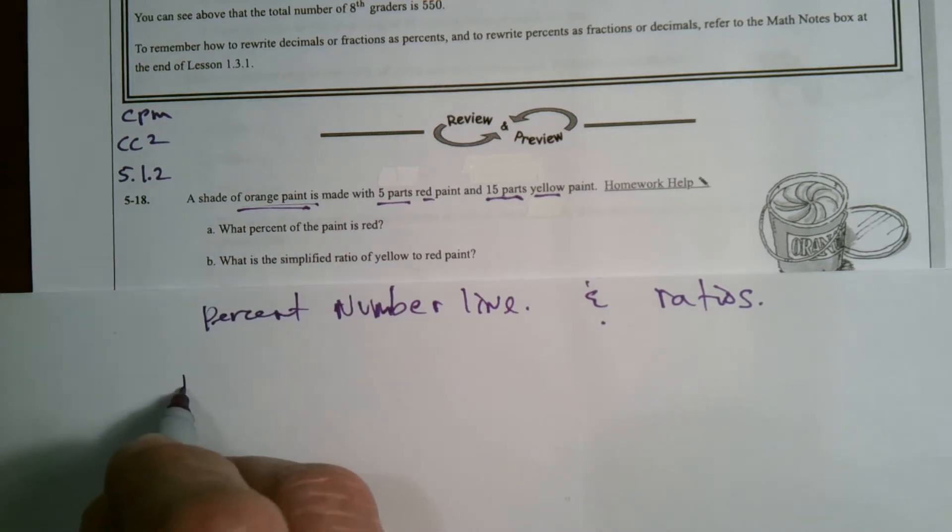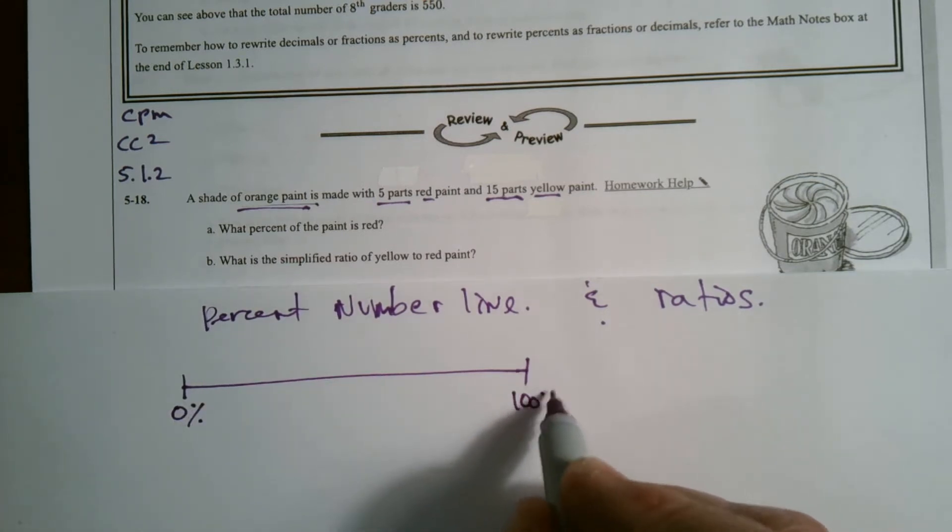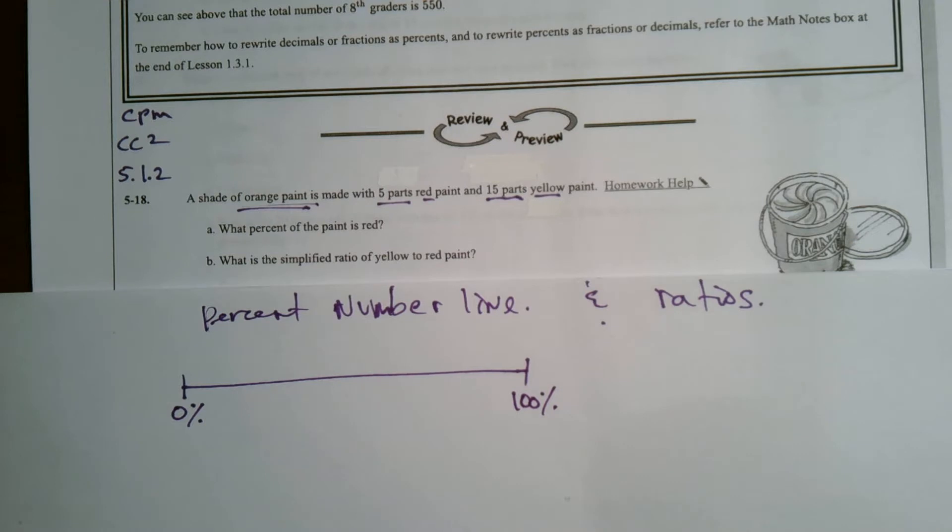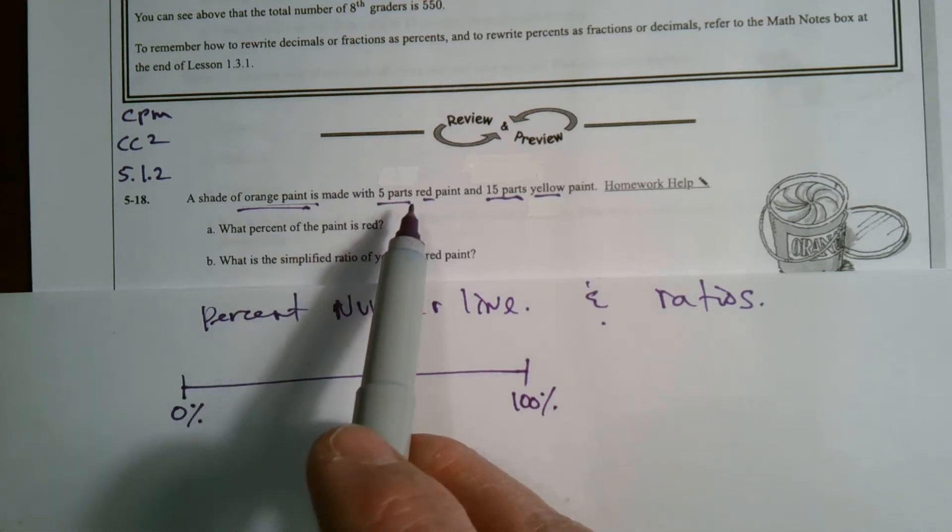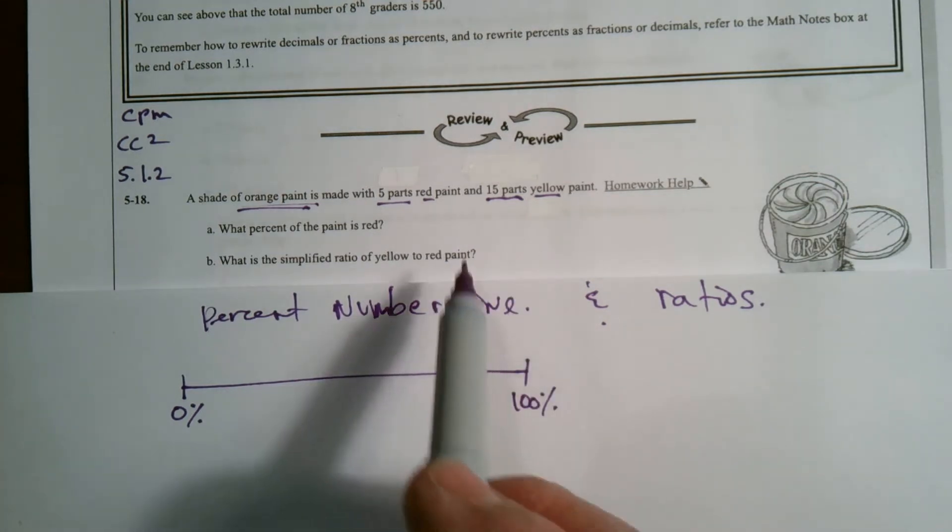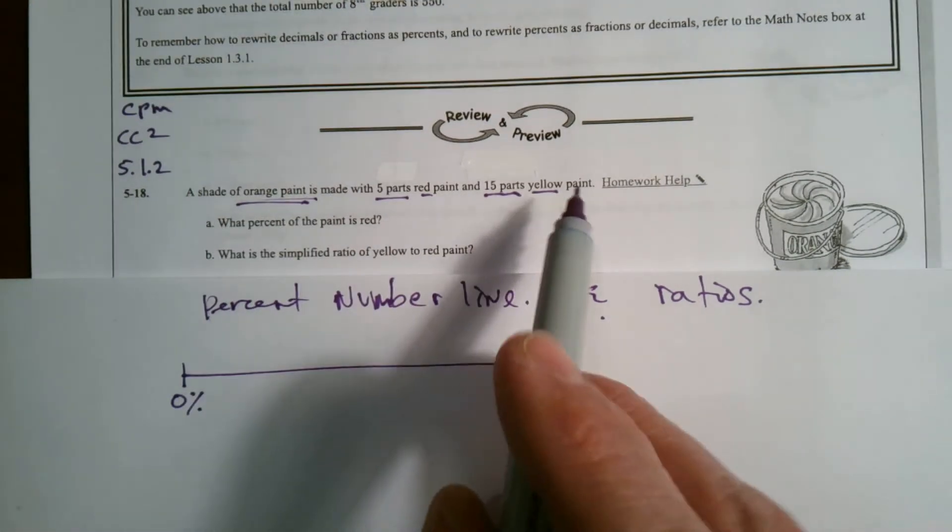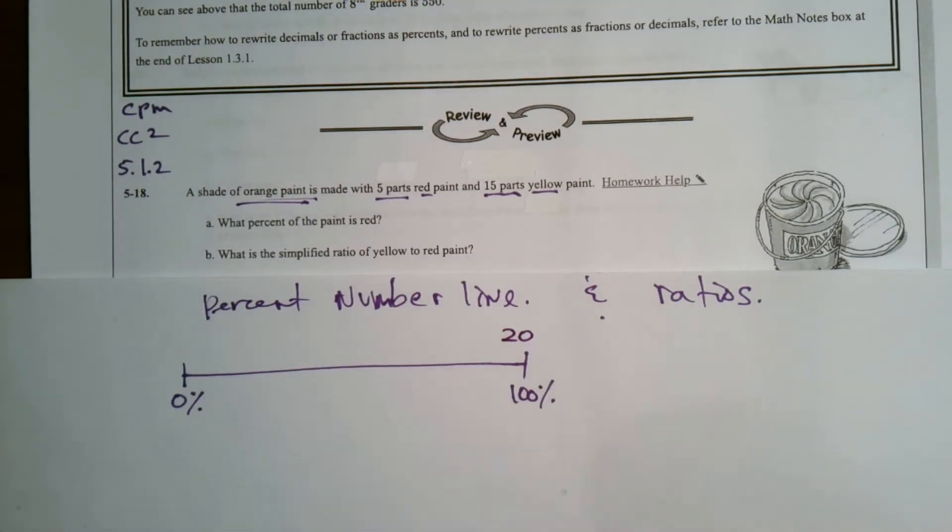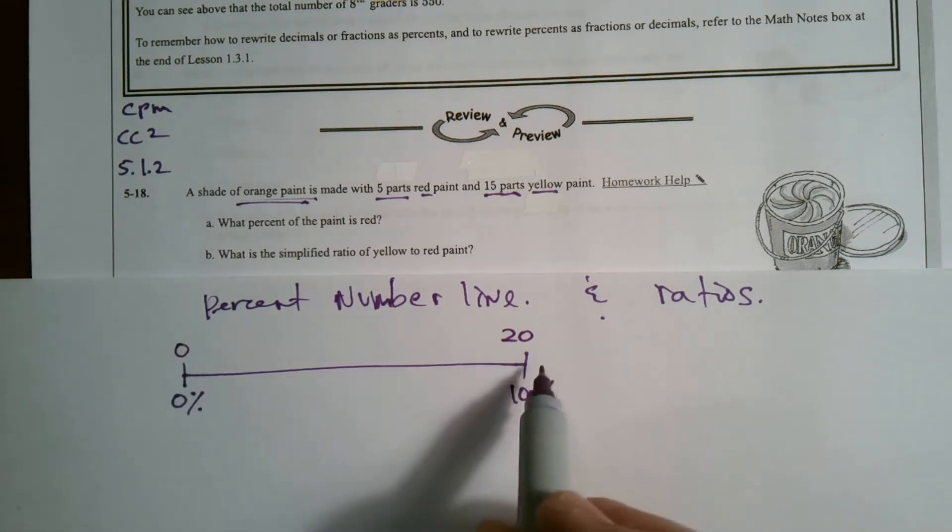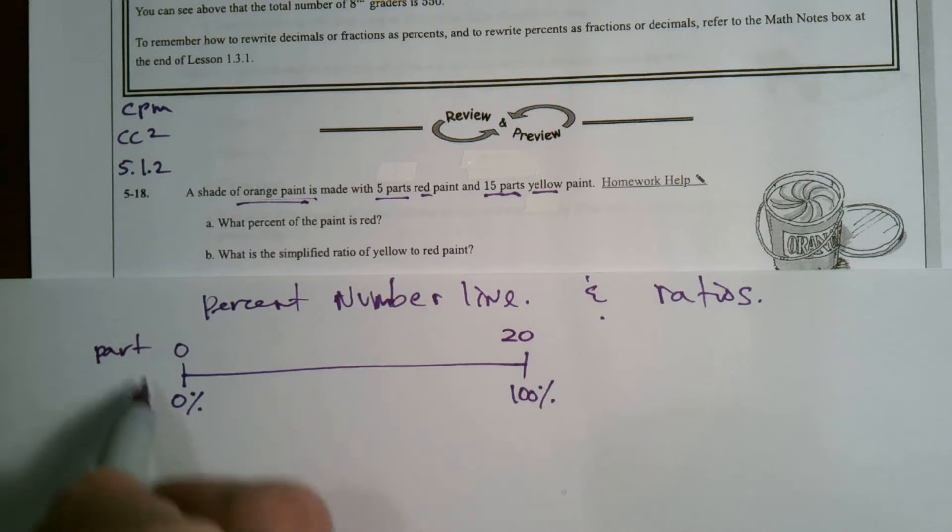Okay, so I need to figure out what percent of paint is red. On a percent number line, you usually have your zero to 100 percent. And what I'm needing to figure out is what parts are red, what parts are yellow. So I need to think about total parts. If I have five parts red, 15 parts yellow, my total parts would be 20. So here's from zero to 20 on my parts, right?